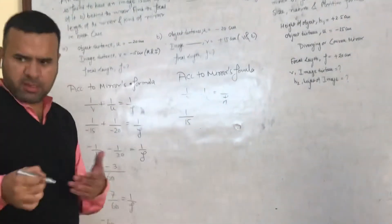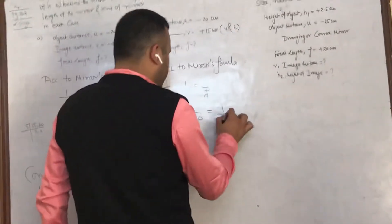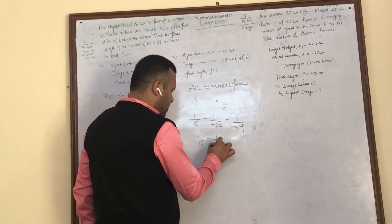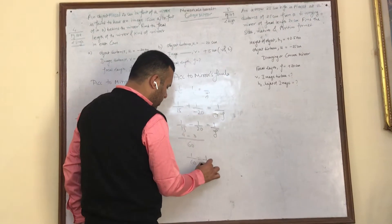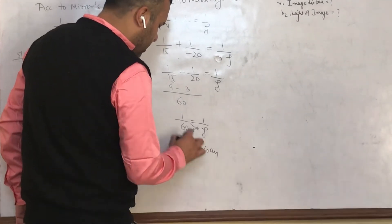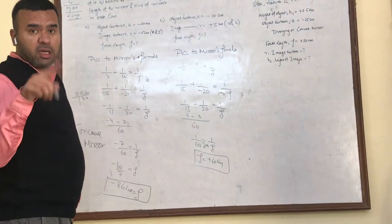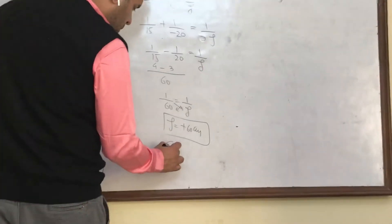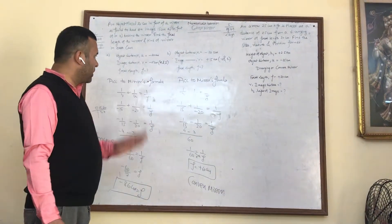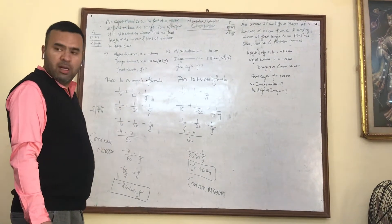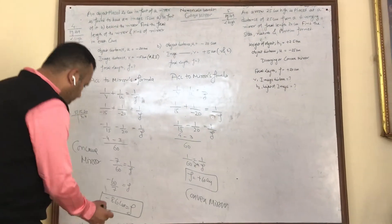According to the mirror formula: 1/v + 1/u = 1/f. Put v = +15 and u = -20. You can also check the answer in Lakhmir Singh page 209, question 4. We need to find the focal length: 1/15 + 1/(-20) = 1/f. Taking LCM 60: (4-3)/60 = 1/60 = 1/f. So f = +60. Since focal length is positive, the mirror is a convex mirror. Remember: wherever the word 'concave' appears, focal length is negative; wherever 'convex' appears, focal length is positive.